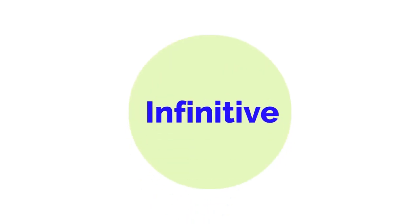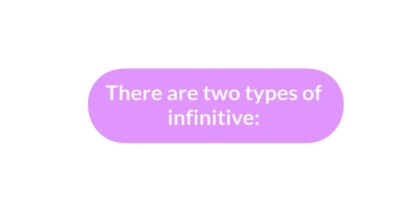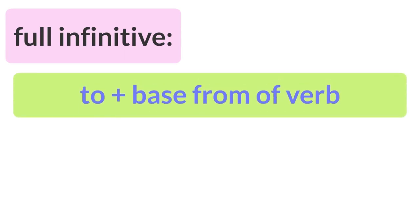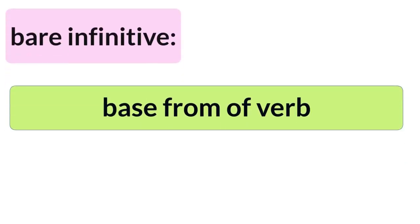There are two types of infinitive. The full infinitive is 'to' plus the base form of the verb — for example, 'to work'. The bare infinitive is simply the base form of the verb — for example, 'work'.